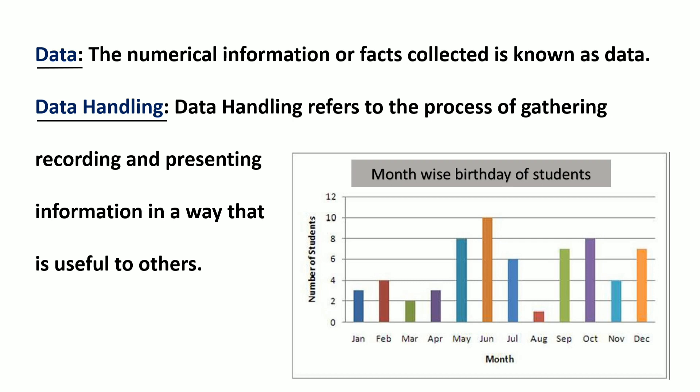Data collected from reports published by agencies, newspapers, internet, magazines and other sources are called secondary data. For example, literacy rate of five states of India or average temperature of five major cities of Gujarat.